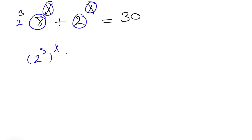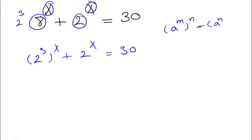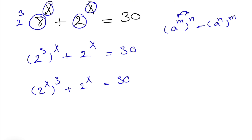So we have 2 cubed to the power of x plus 2 to the x equals 30. From the laws of exponents, we know when we have a to the m to the n, this equals a to the n to the power of m. Basically we can switch these two, and we'll get 2 to the x to the power of 3 plus 2 to the x equals 30.